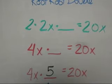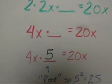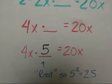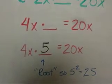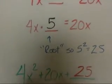But the 5 is a root, right? So 5 squared is 25. So the number that you're missing is 25.